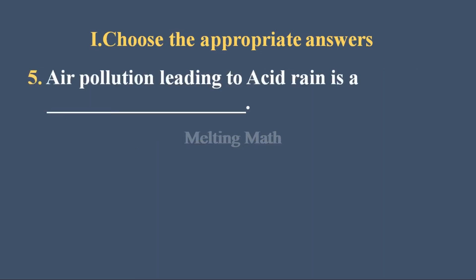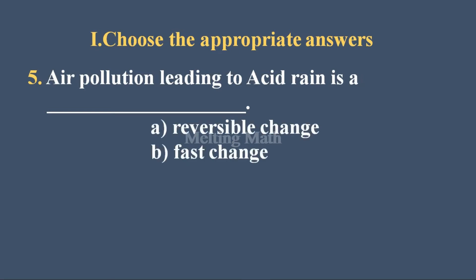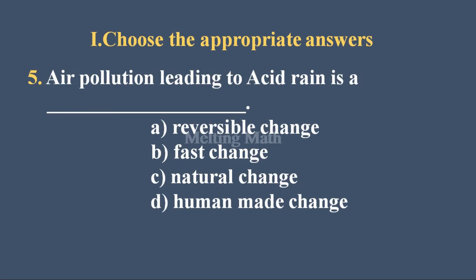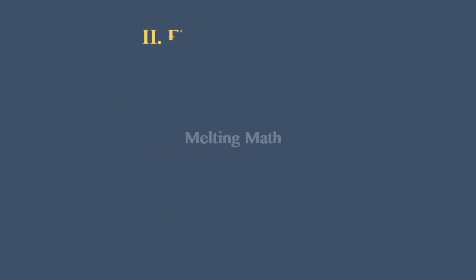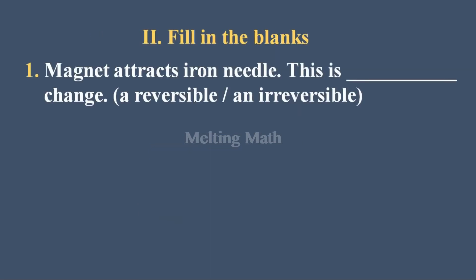Question five — air pollution leading to acid rain is a blank change: reversible, fast, natural, or human-made? Definitely it's a human-made change. We all know it. So the answer to question five is a human-made change.